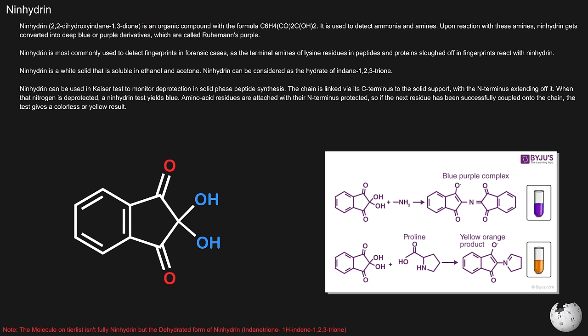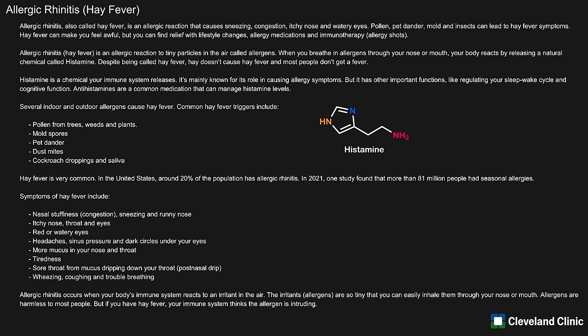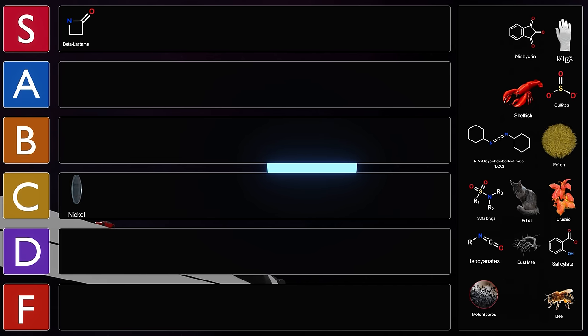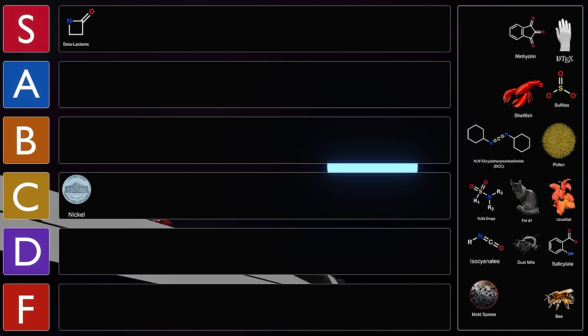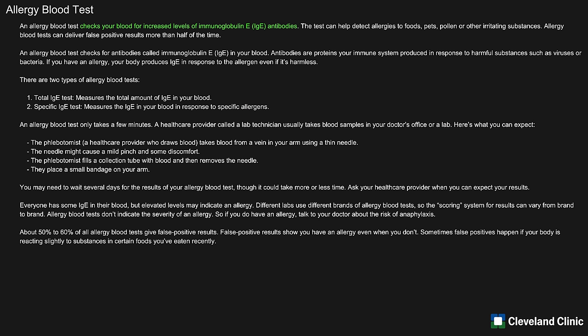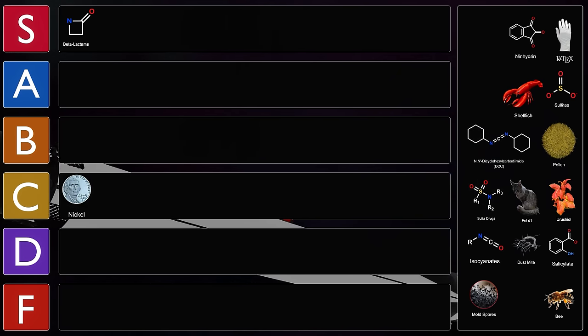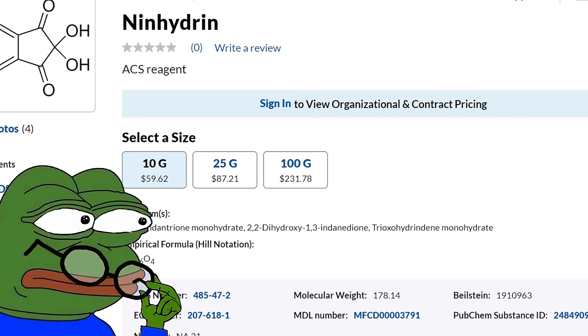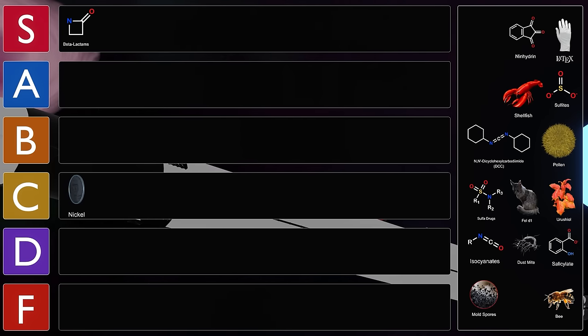You might not have heard of this one before, but this is ninhydrin. Ninhydrin is a really useful reagent in chemistry, and it can be used to detect ammonia and amines, and this is exploited in forensics for detecting fingerprints. Ninhydrin may cause an allergic reaction which results in IgE-mediated rhinitis, also known as inflammation of the nose, as well as asthma. They were able to show that her IgE levels almost doubled in response to ninhydrin. While this is only one case, it's probably not that common of an allergen. So overall, it's somewhat irritating, but it's pretty mild, so why don't we put ninhydrin right into D tier?